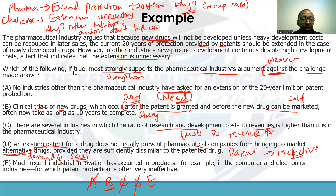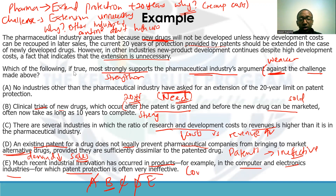Answer choice E: 'Much recent industry innovation has occurred in products — for example, in the computer and electronic industries — for which patent protection is often very effective.' Notice this talks about products, not drugs, specifically computer and electronic industries. Just because patent protection is effective for those products doesn't mean it's necessarily effective — or ineffective — for drugs. This is one of those out-of-scope answers; it doesn't mean that if something applies to A, it must also apply to B. We can eliminate E, and our answer is B.